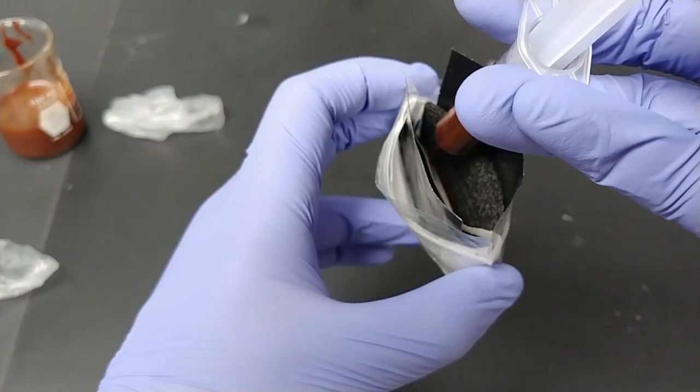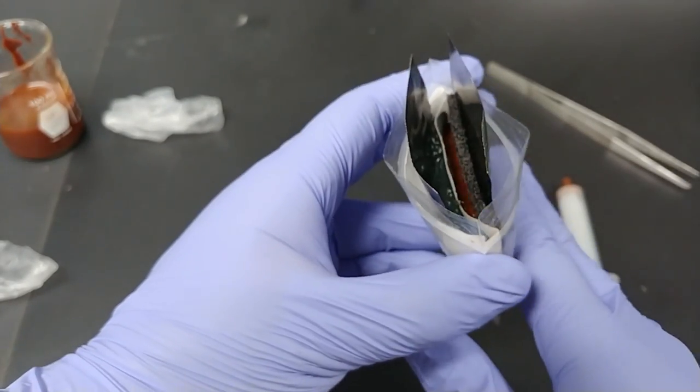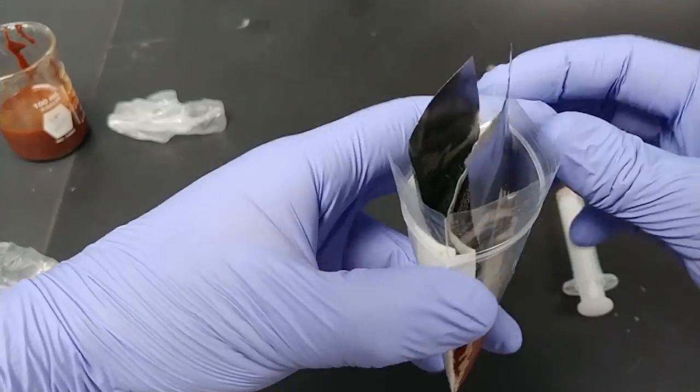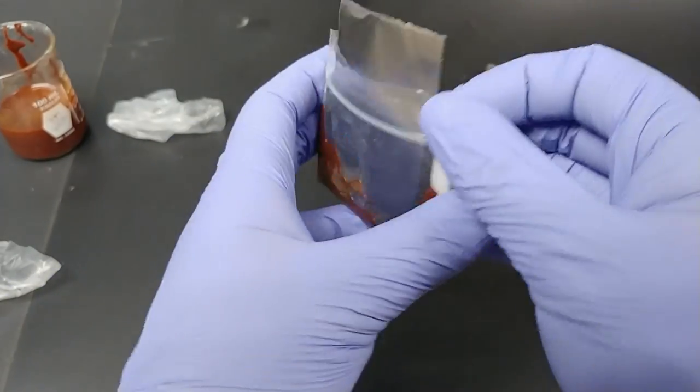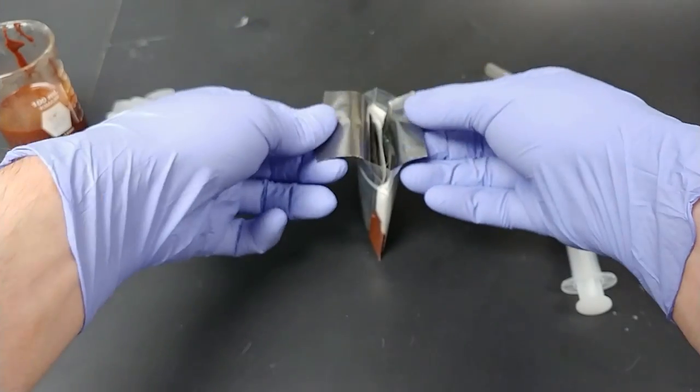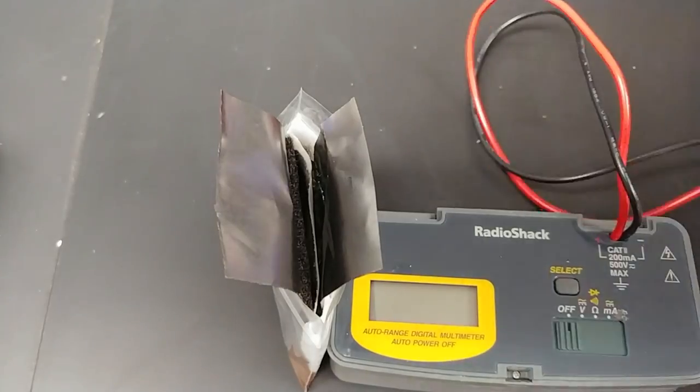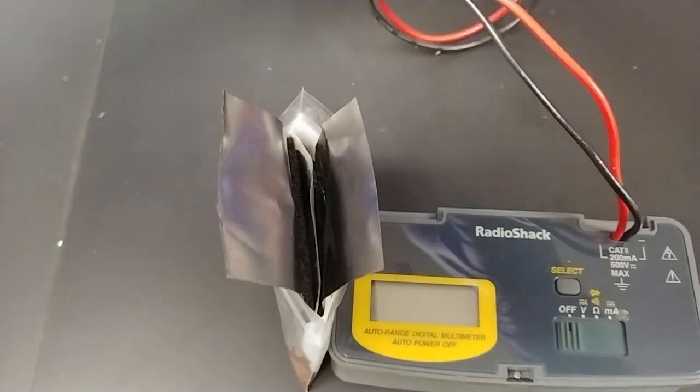One of the little tricks is you want to make sure that you wet that interface between the membrane and the carbon felt. That interface needs to be nice and moist to make a good connection. Second little trick is you want to make sure that those two graphite foil current collectors don't touch one another or else it shorts the battery. So you want to be real careful about that.